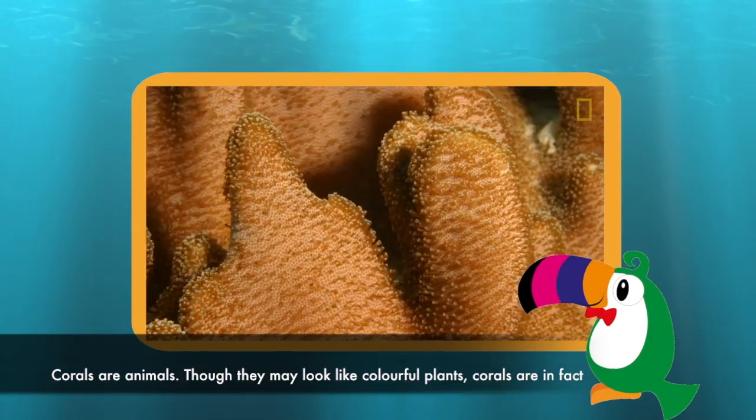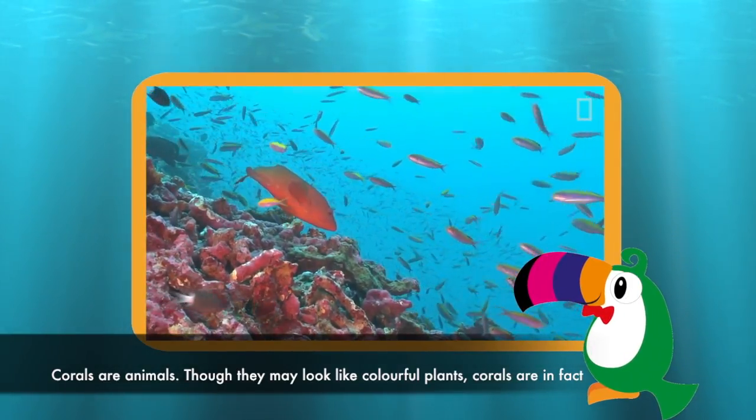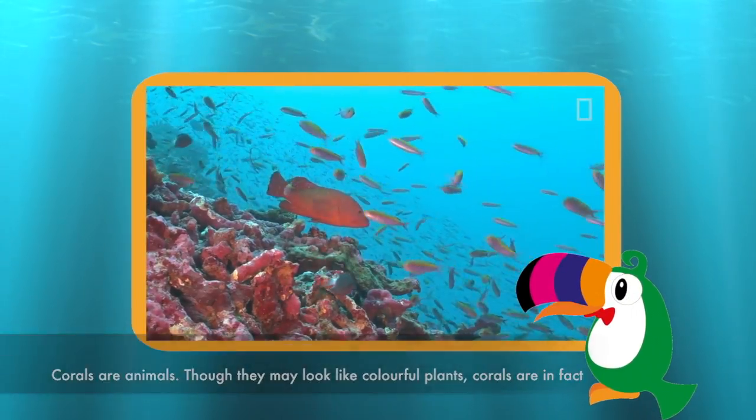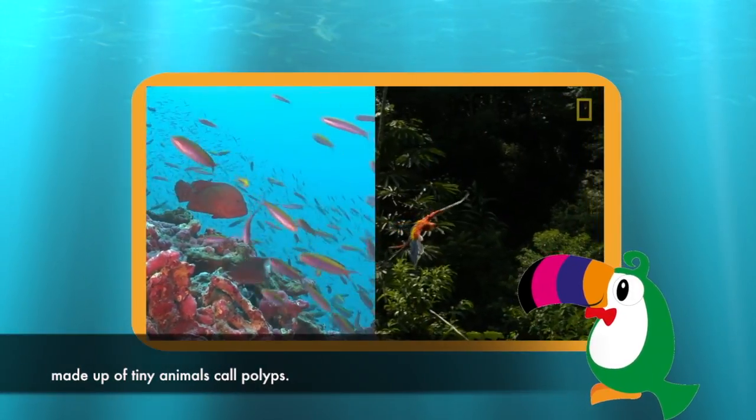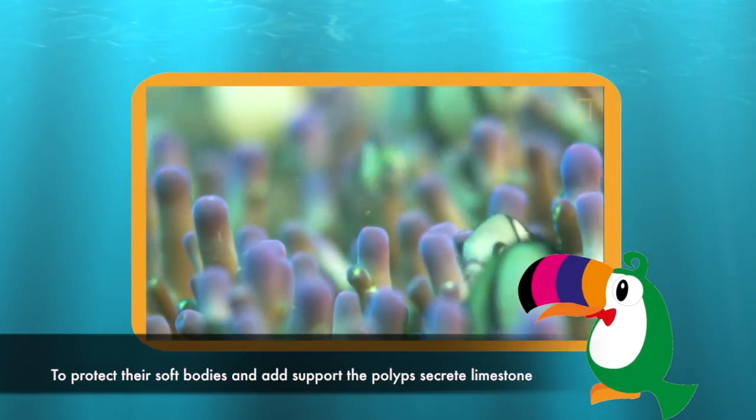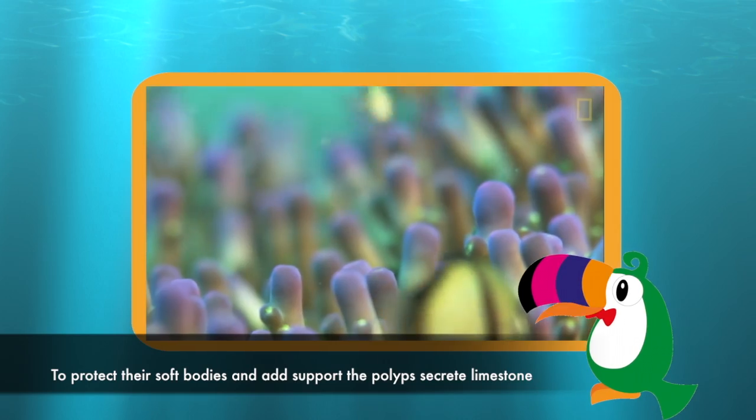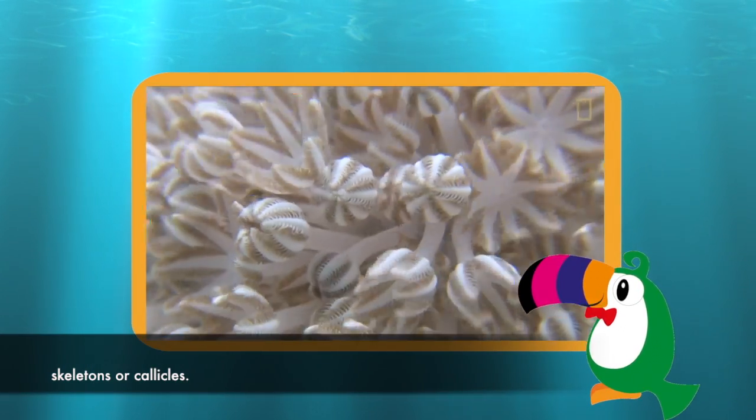Coral are animals. Though they may look like colorful plants, coral are in fact made up of tiny animals called polyps. To protect their soft bodies and add support, the polyps secrete limestone skeletons or calicles.